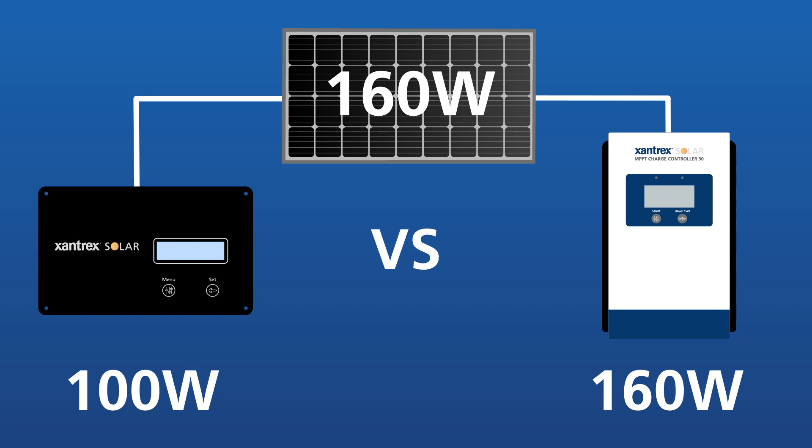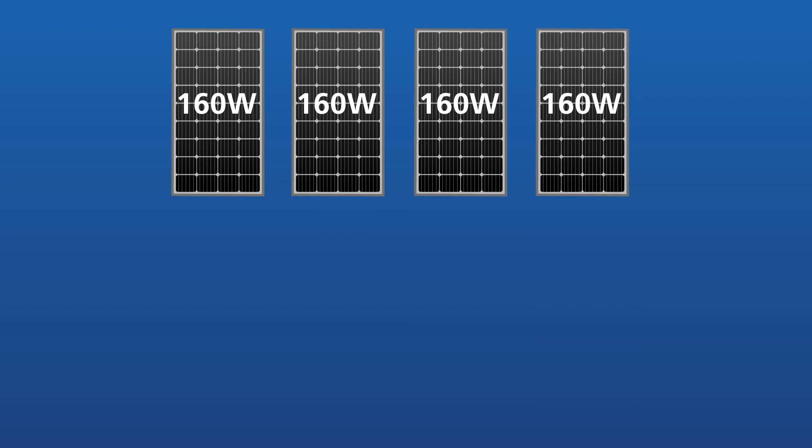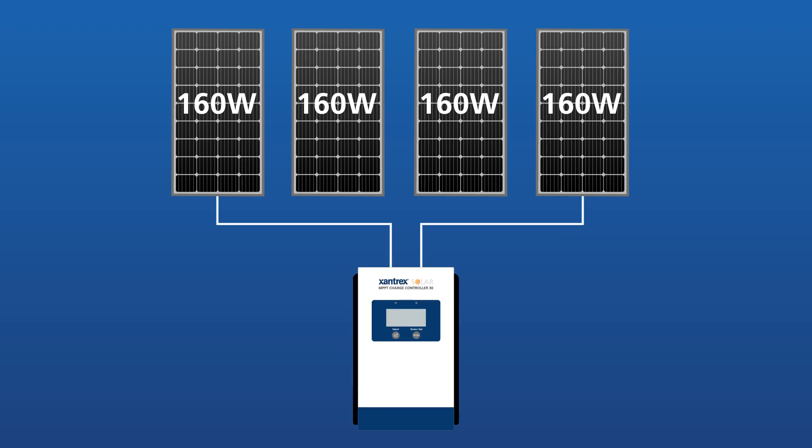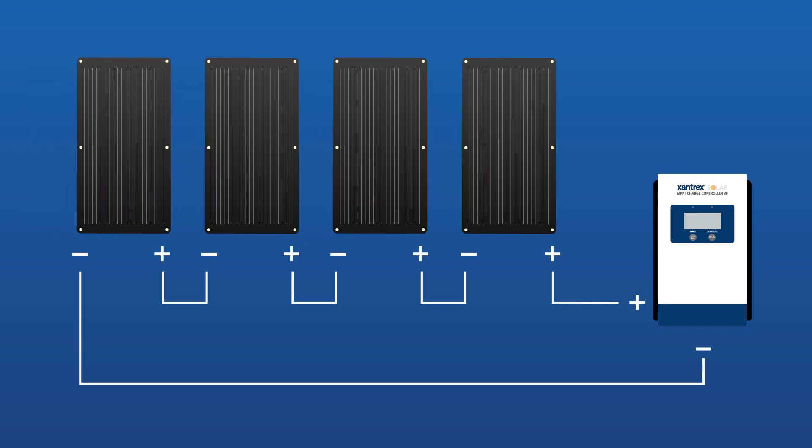In our example, we have a 640-watt solar array comprised of four 160-watt panels. It would make sense to use an MPPT charge controller. We will learn about wiring of panels using an MPPT charge controller in our next video.